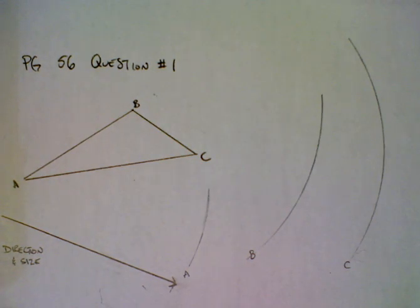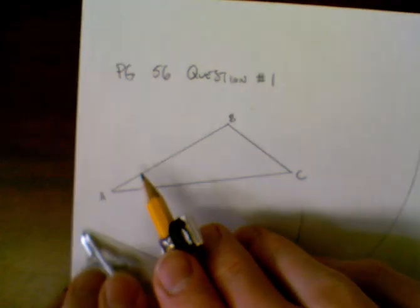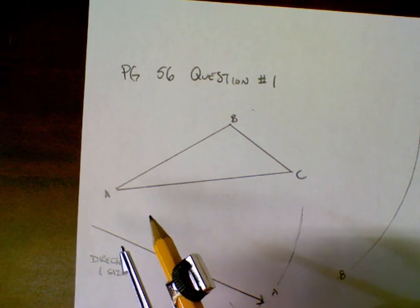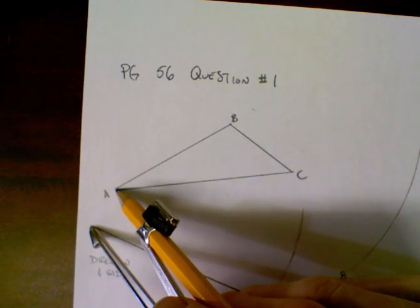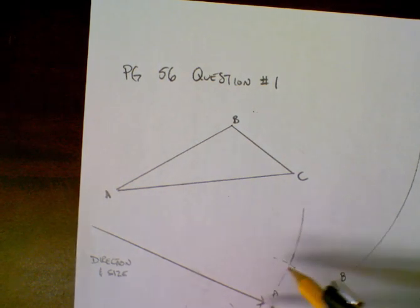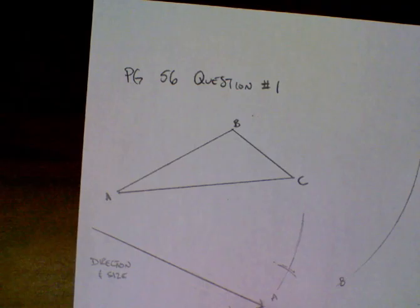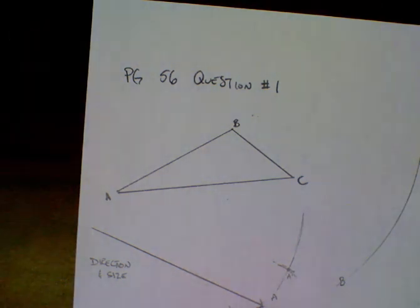Now that I have the distance my figure will travel — from A to A prime, B to B prime, and C to C prime — I need a second distance to find exactly where each translated point is. I know that A is exactly a certain distance from the back of the arrow, so A prime will be that same distance from the front of the arrow. I measure by putting the compass point on the back of the arrow and the pencil tip on point A, then bring the compass to the tip of the arrow and draw an arc. Where that arc intersects with arc A gives me point A prime.